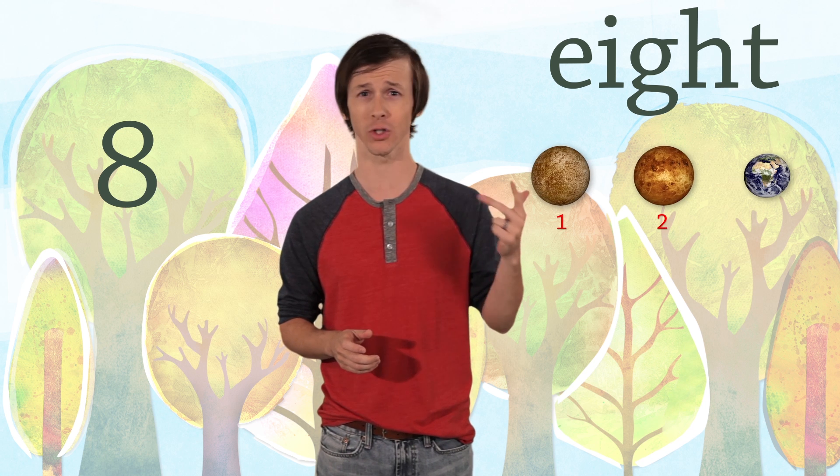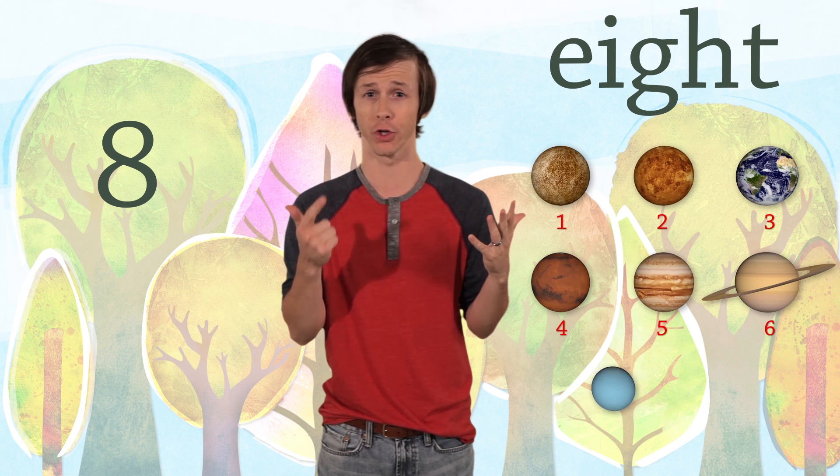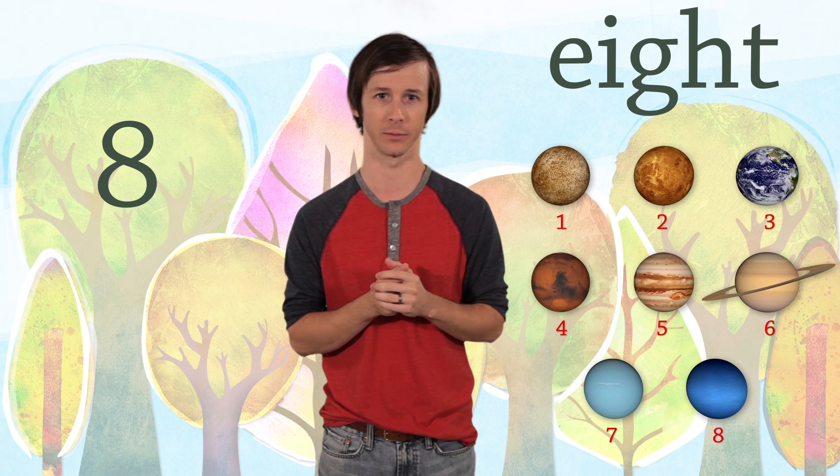Mercury, Venus, Earth, Mars, Jupiter, Saturn, Uranus, and Neptune. Eight planets in our solar system.